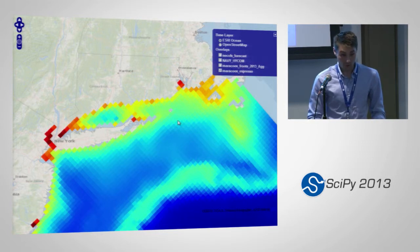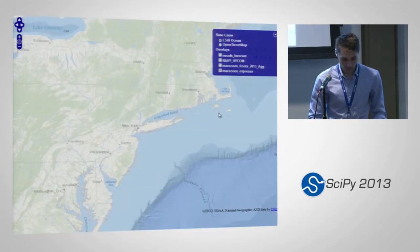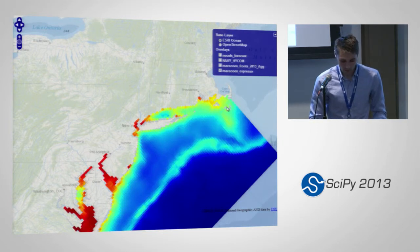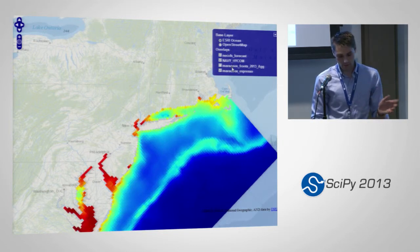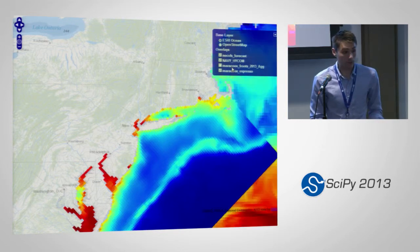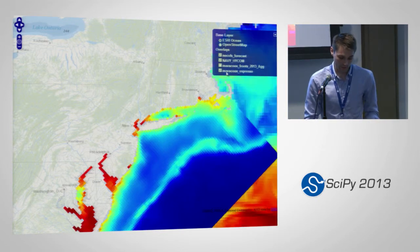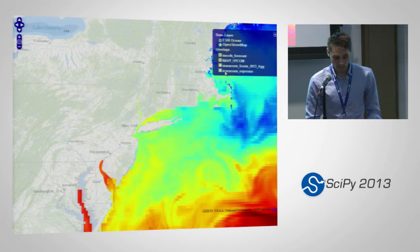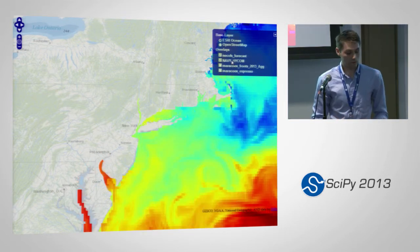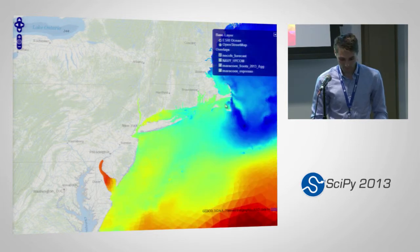I've been focusing on unstructured triangular meshes, but SciWMS works for structured grids as well. All of this data is remotely located from the EC2 instance that this service is running on, so a lot of the latency you see is just due to network latency.